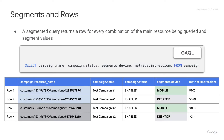Now let's talk about what happens when you put segments into your SELECT clause. We've inserted segments.device into our SELECT clause. A segmented query returns a row for every combination of the main resource being queried — so the resource name — as well as the segment values.